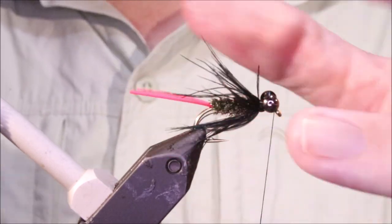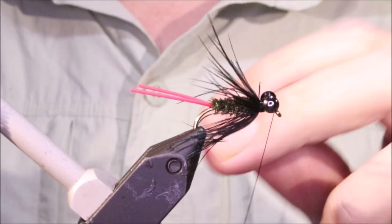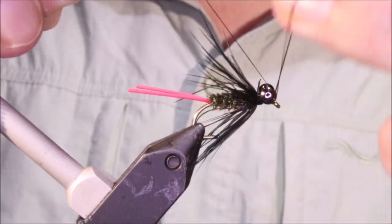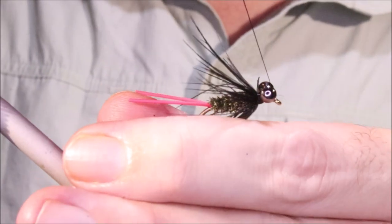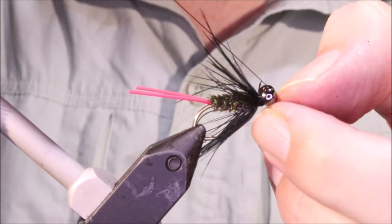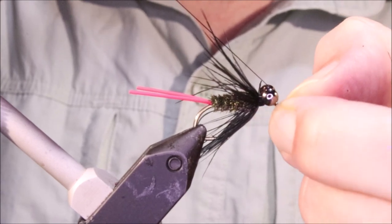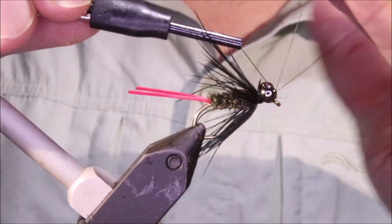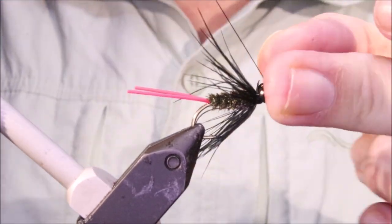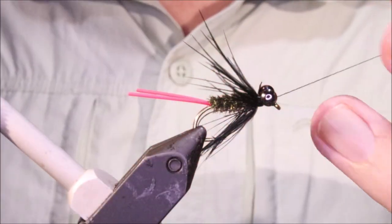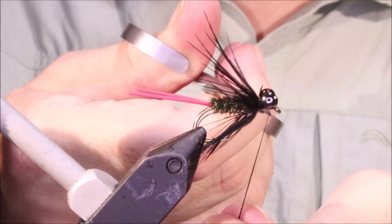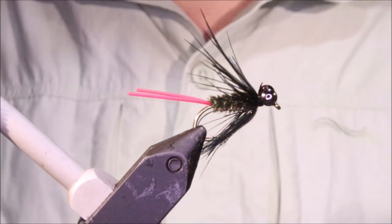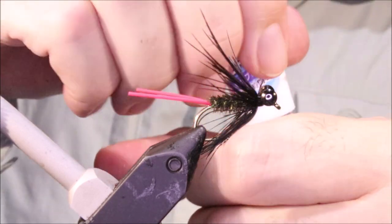Whip finish. Thread through the wee bit there. Cut your thread and then a wee coat of varnish. Get a wee bit of thread there. And that's it, it's no hard fly to tie.